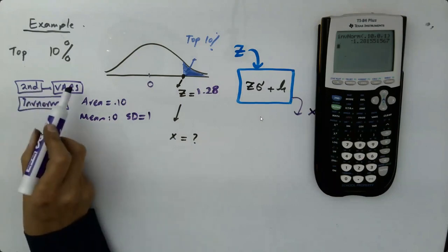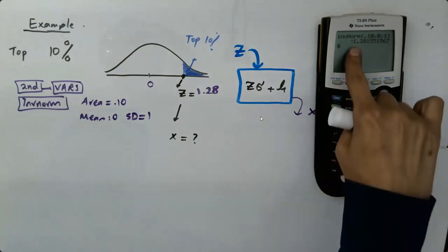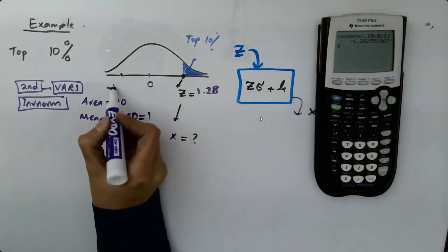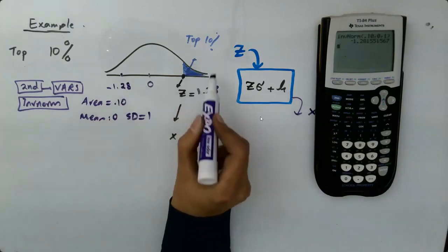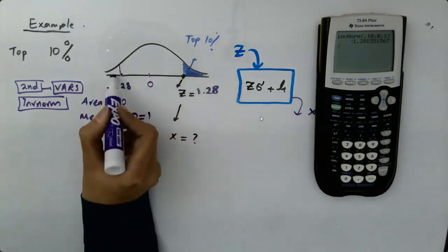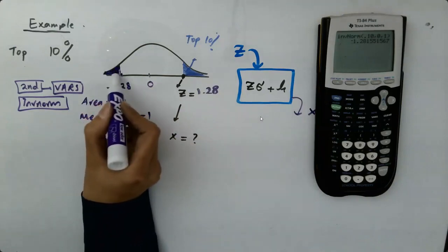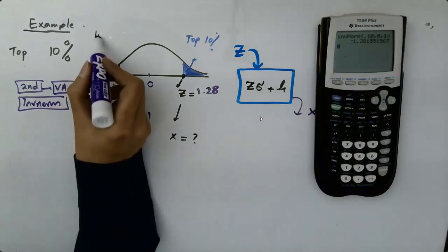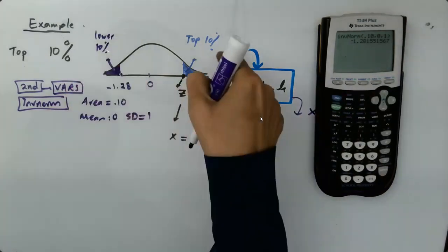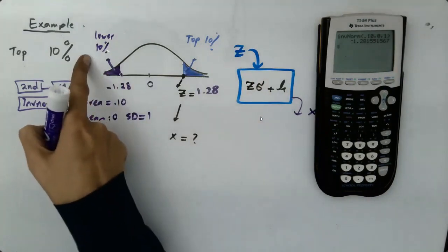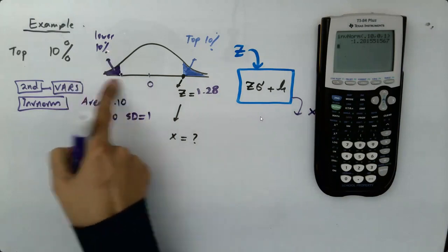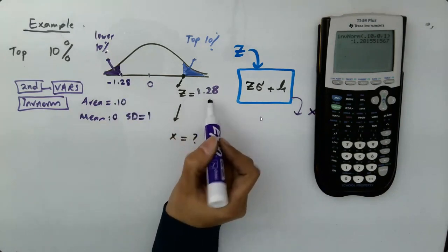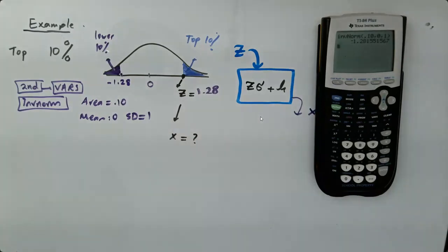It wasn't that hard. I used second vars inverse norm. So the calculator computes a negative Z score, which is the mirror image on the left hand side. Negative 1.28. But since I have the top 10%, this is the below 10%, the lower 10%. This is what your calculator has inside it.